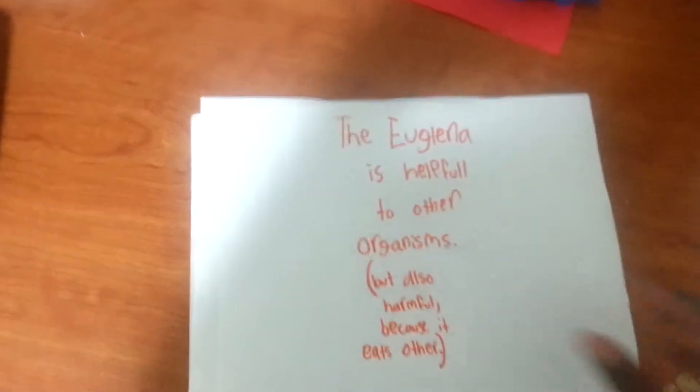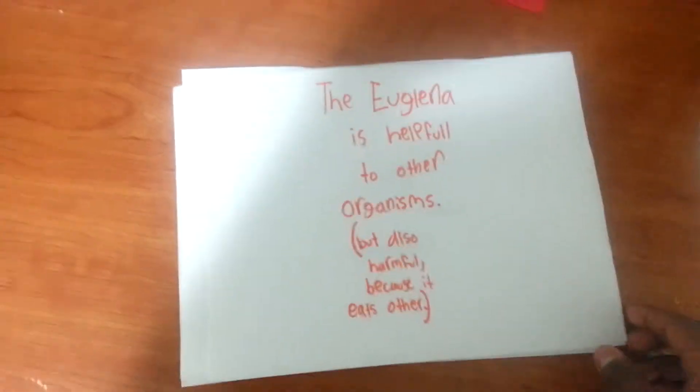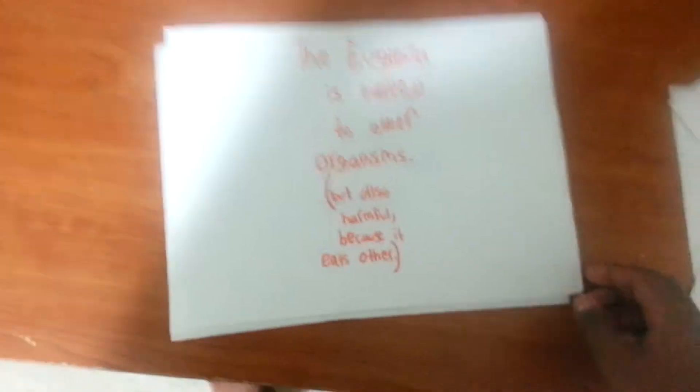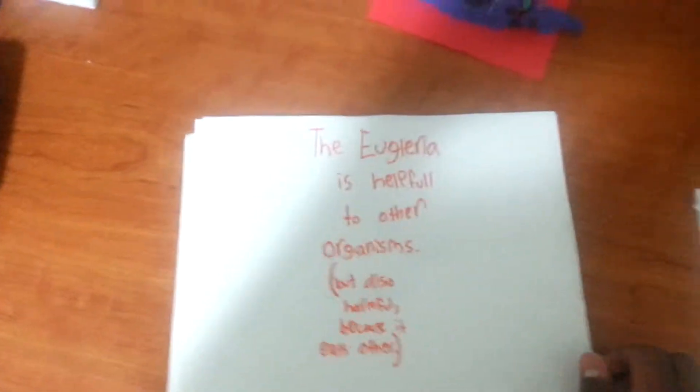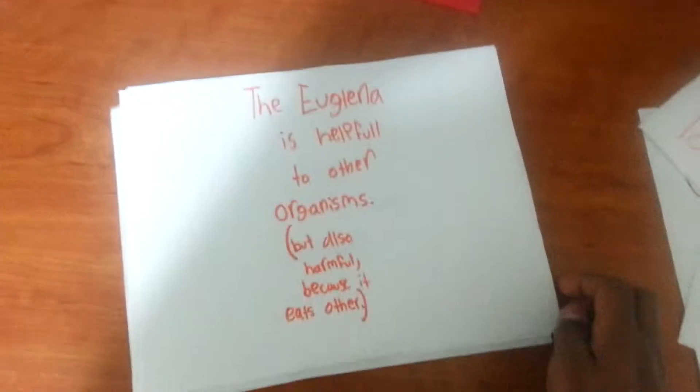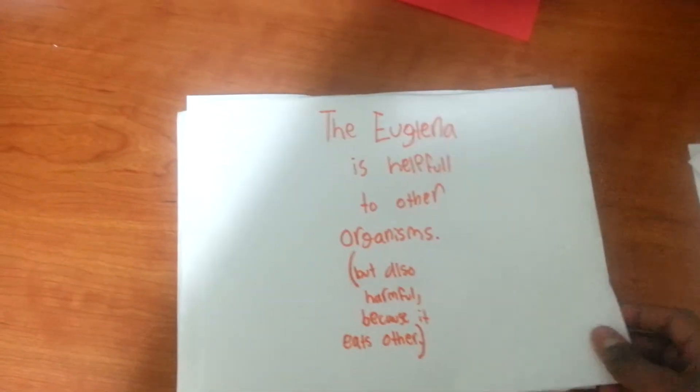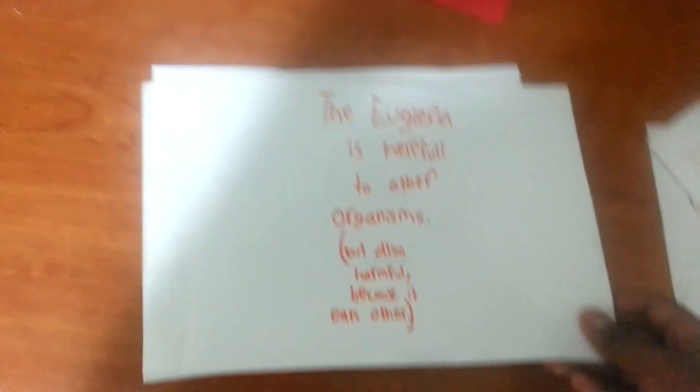How does it affect other organisms? It can be good for other organisms, or it can be harmful, because it eats other organisms when it's hungry and cannot make its own food.